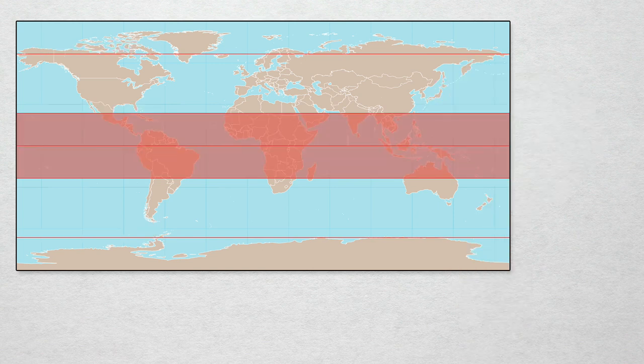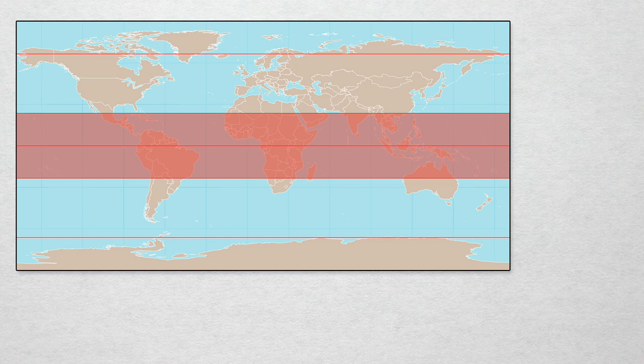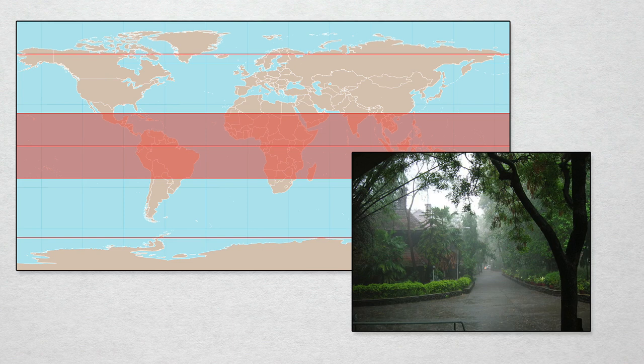Well, inside the tropics the sun will be directly overhead for at least one day in the year. This is where we expect to find rainforests, savannas, monsoons, etc.